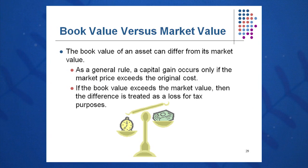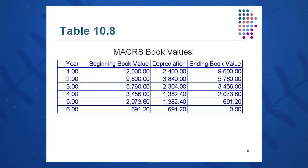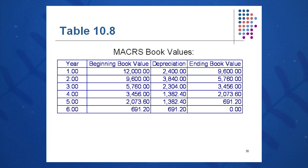Don't forget that book value and market value are different. You may sell a piece of equipment after a project concludes and receive money for it even though it's fully depreciated — in that case you have a gain and the IRS will want tax on that gain. If you sell for less than book value, you may have a loss for tax purposes. For example, a five-year MACRS class with $12,000 equipment: in year one, take 20% times $12,000 to get $2,400 depreciation, and so on. The depreciation amounts should add up to $12,000 with an ending book value of zero at the end of year six.